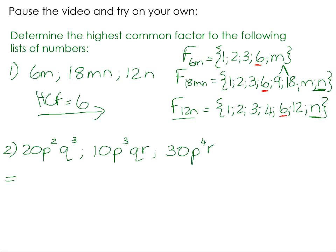Let's try without listing all factors: find the HCF of 20p²q, 10p³r, and 30p⁴r. The highest common numeric factor of 20, 10, and 30 is 10. For p: we have p², p³, and p⁴ — the highest common power is p², limited by the first term. For q: only present in the first number, not common. For r: present in the second and third but not the first. So the highest common factor is 10p².